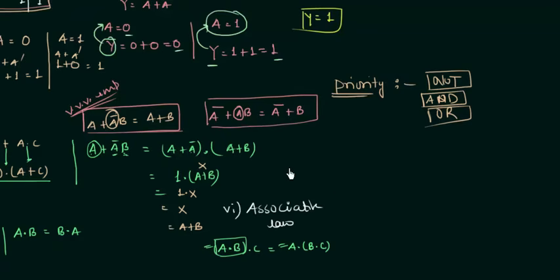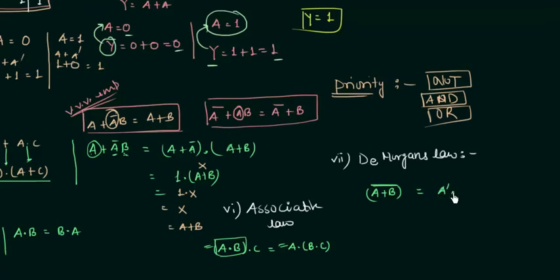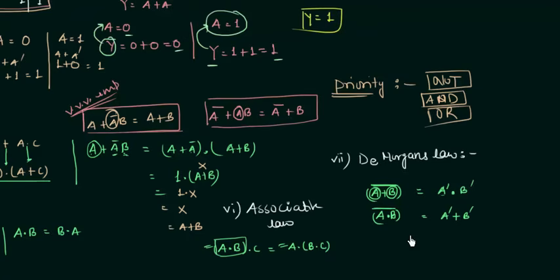The seventh and last rule is De Morgan's law. If we have (a OR b) and want its complement, it equals a' AND b' — we complement each variable and change OR to AND. Similarly, the complement of (a AND b) equals a' OR b' — we complement each variable and change AND to OR. This is a simple way to take the complement, and we have now completed all the rules for Boolean algebra.